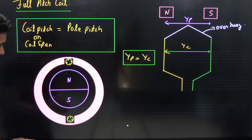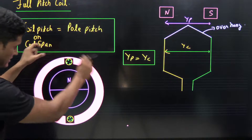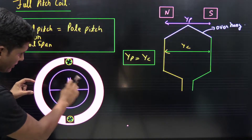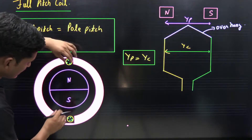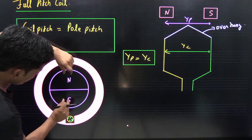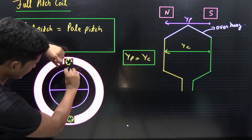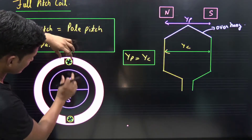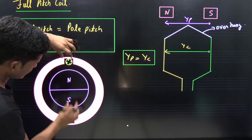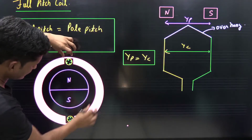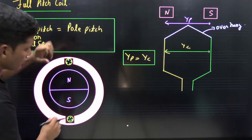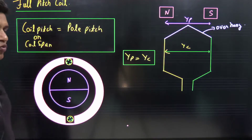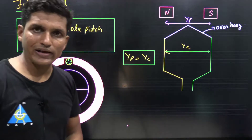In this particular example, there is a stator and a rotor, and a field winding is placed on the rotor. The distance between north and south pole is YP, whereas the distance between the two coil sides is YC. Here YC is equal to YP, and it is known as a full pitch coil.